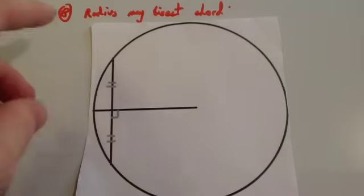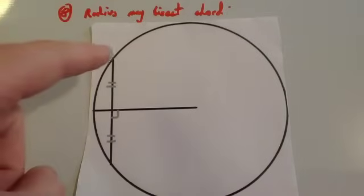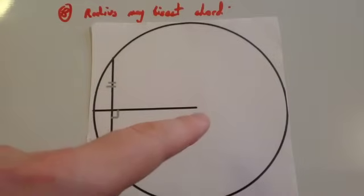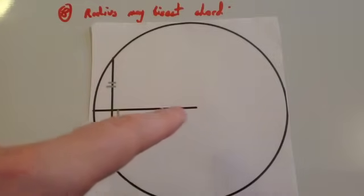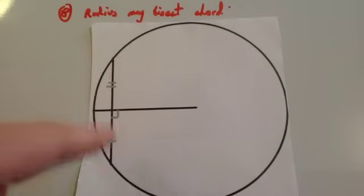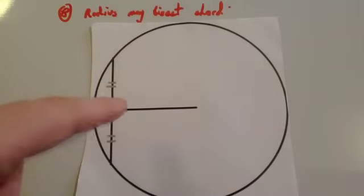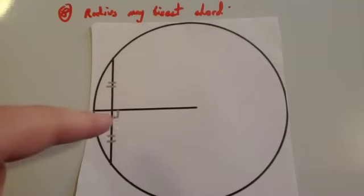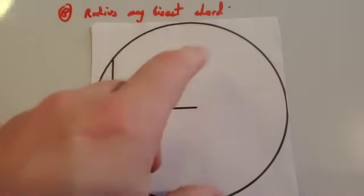The eighth circle theorem is that the radius may bisect a chord. So in other words, if you've got a chord, you can always draw a radius that will go through the center of that chord at a 90 degree angle. So it would also be the perpendicular bisector. It would cut the chord exactly in half at 90 degrees. And you can draw it for any chord.